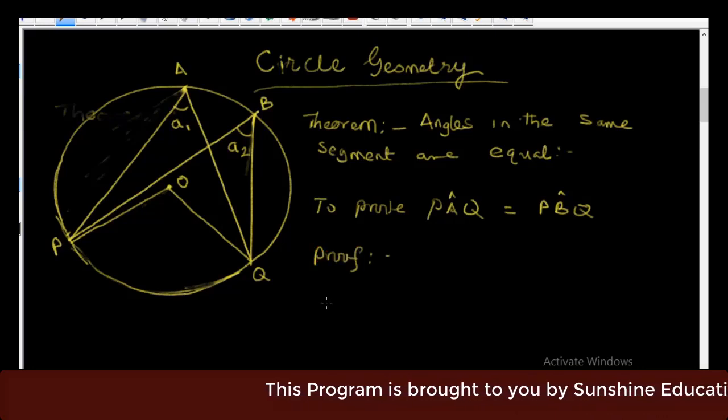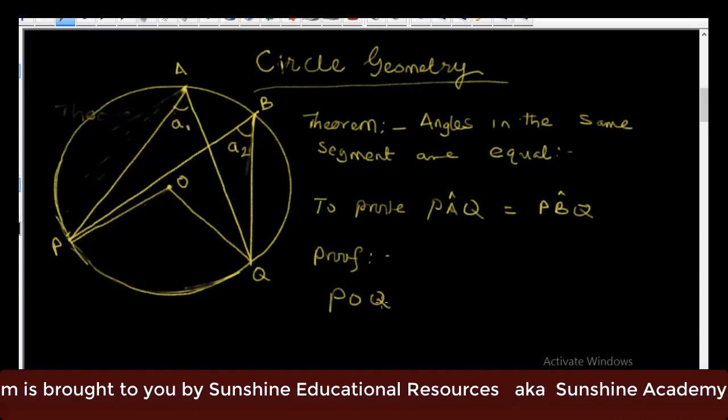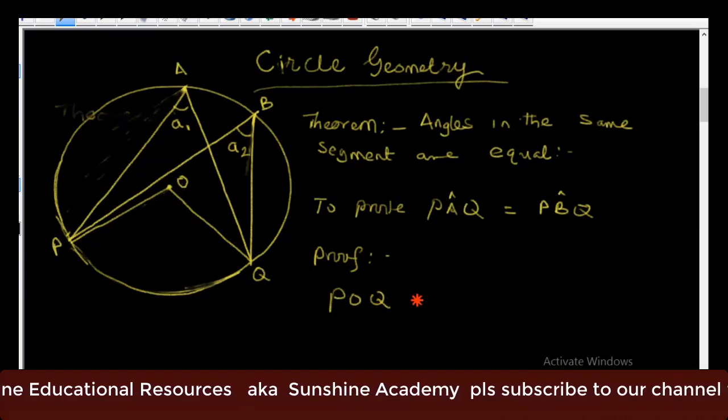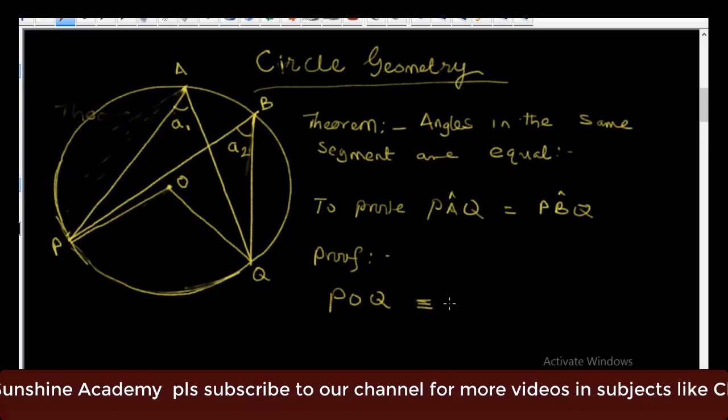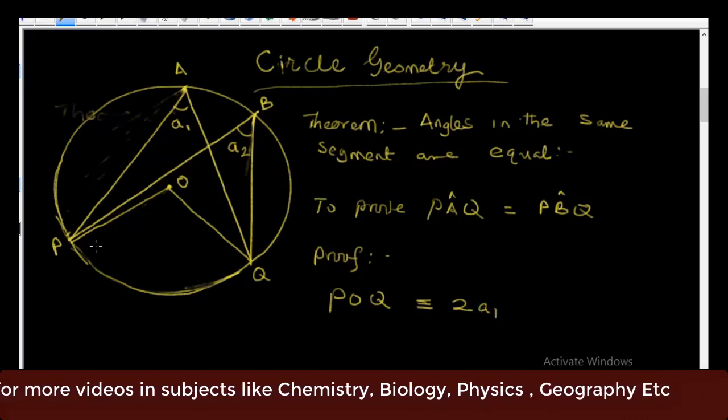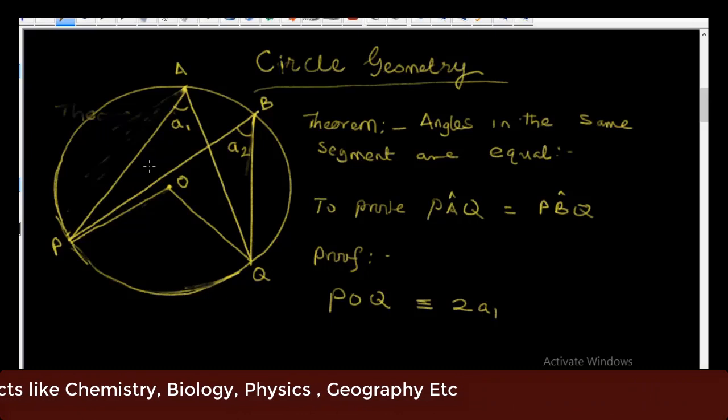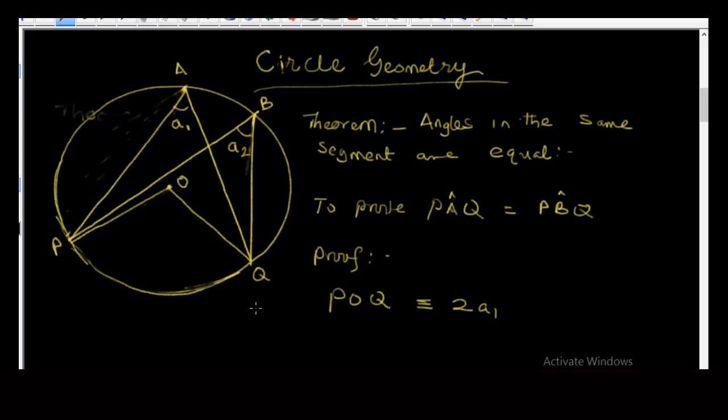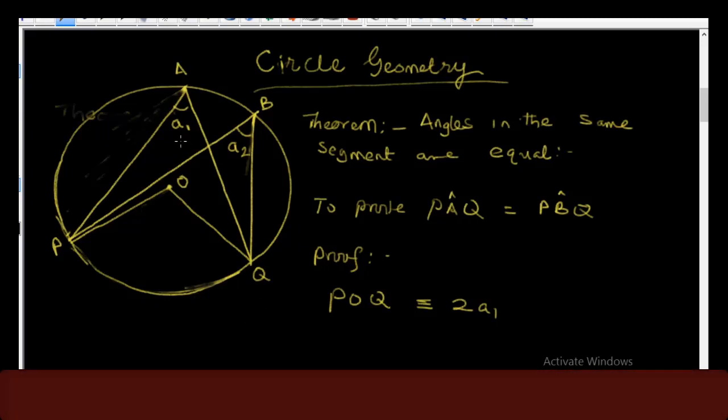Now from this diagram we can deduce that POQ is equal to 2A1. We have done the proof in some previous lessons ago, and so here we just deploy that theorem directly and use it here. So what we're saying here is that angle POQ is 2 times A1.